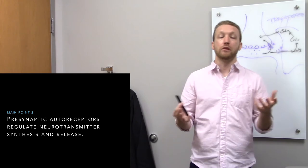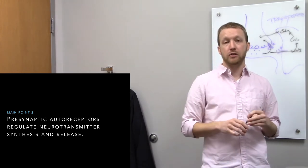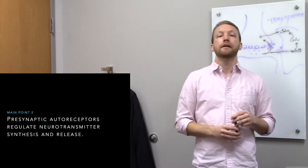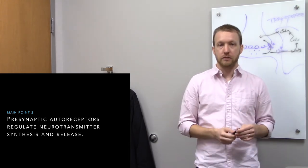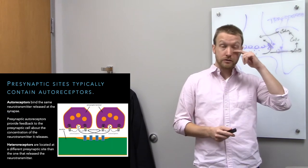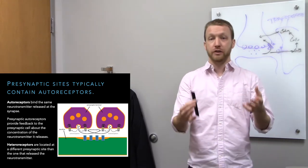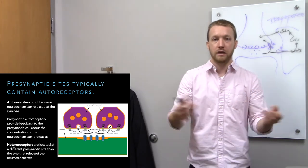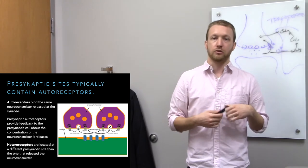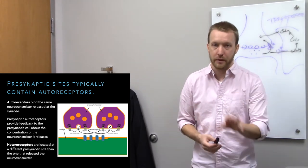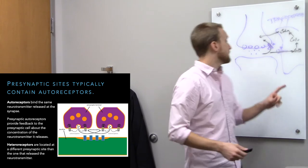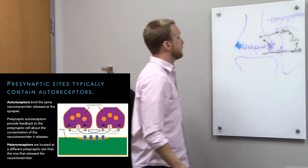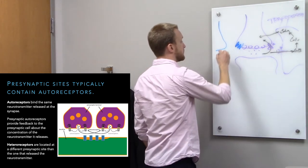When neurotransmitters are floating around in the synapse they're going to bind their postsynaptic targets — we'll cover more of that in lectures eight and nine. On the presynaptic side, there are autoreceptors that regulate synthesis and release of neurotransmitters. This is an important way for the neuron to sense how much neurotransmitter it has released. If there's a lot floating around, it probably shouldn't release more — it needs to allow time for that neurotransmitter to get cleaned up. The neuron has to have a receptor to bind its own neurotransmitter, and if it's at the same synapse we call this an autoreceptor.